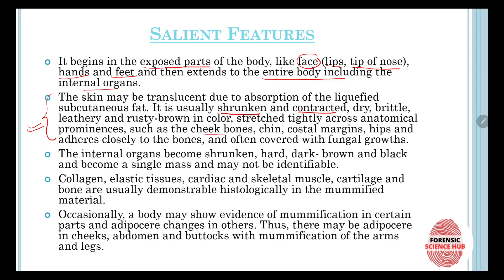The internal organs also become shrunken, hard, dark brown and blackish in colour, and they may become like a single mass where two different organs cannot be identified separately. Collagen, elastic tissue, cardiac and skeletal muscle, cartilage, and bone are usually demonstrable histologically in mummified material. Occasionally a body may show mummification in certain parts and adipocere changes in others — for example, adipocere in the cheeks, abdomen, and buttocks, with mummification of the arms and legs.